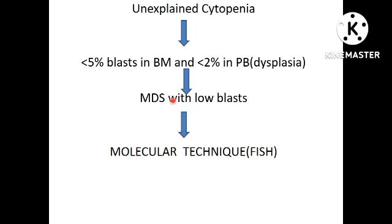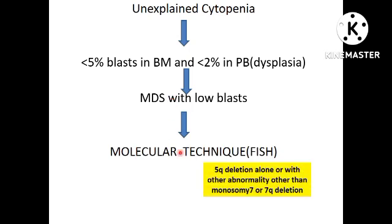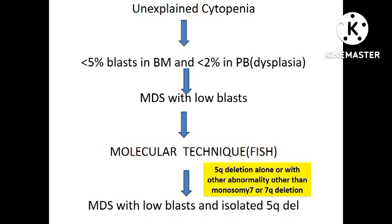If you then perform FISH and find a 5Q deletion with any one other abnormality other than monosomy 7 or 7Q deletion, this entity will become MDS with low blast and isolated 5Q deletion.